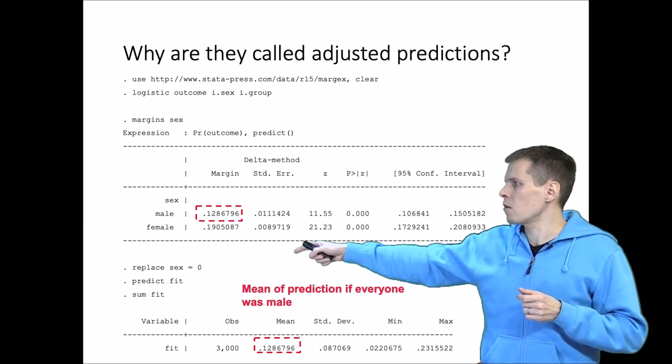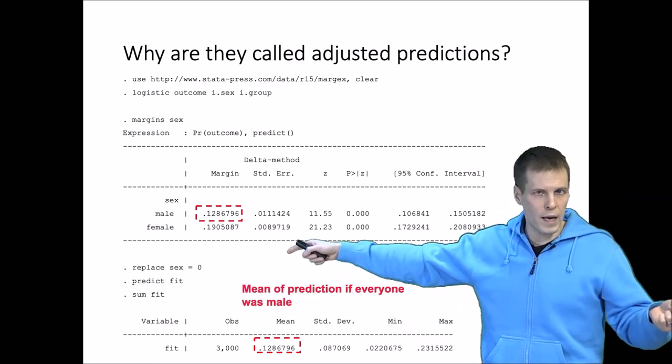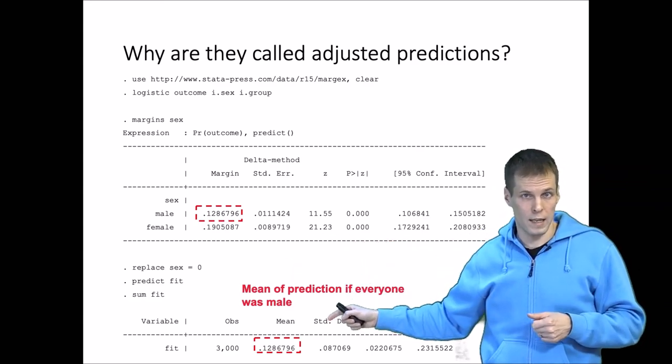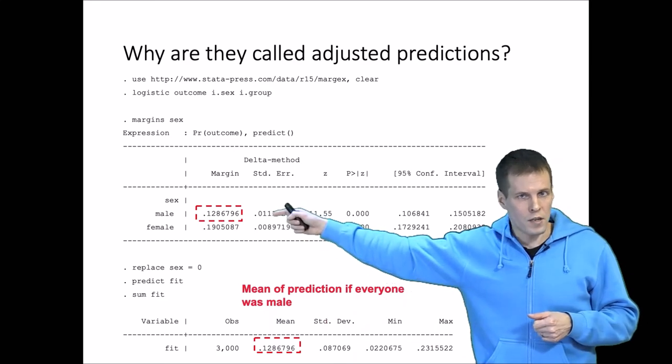We replace everything, all sex with zeros—that is male, one is female—and then we predict, we take the mean of the predictions, and that is our margin here in Stata's output.